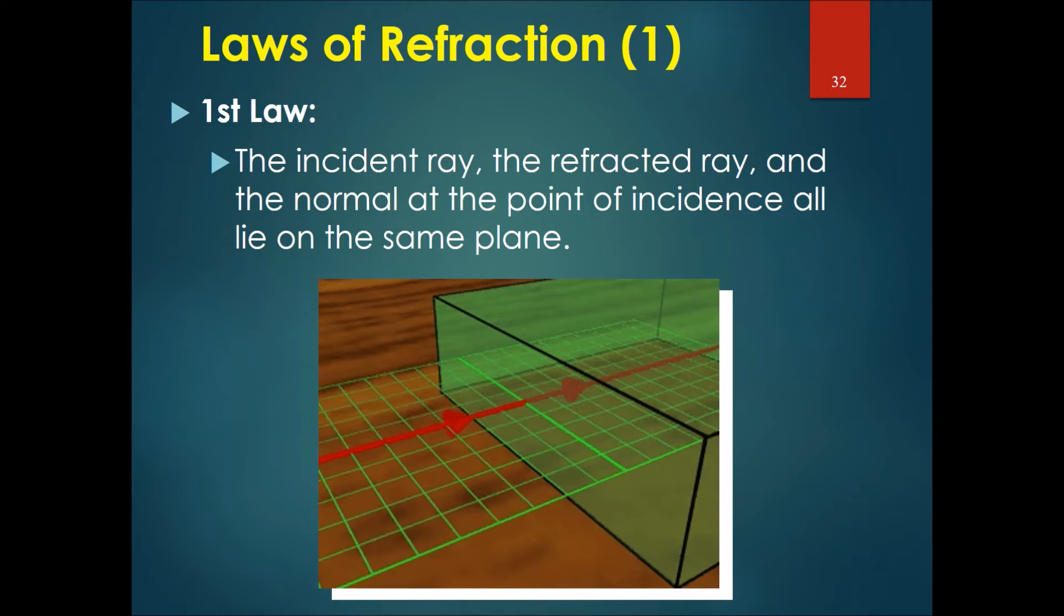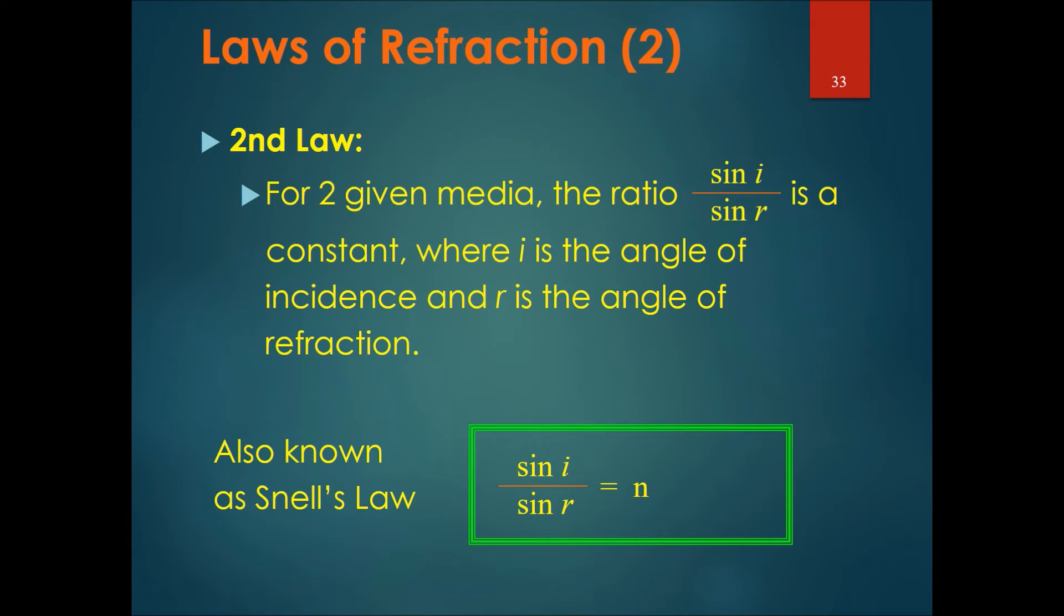The first law of refraction states that the incident ray, the refracted ray, and the normal at the point of incidence all lie on the same plane. This is the same concept as the law of reflection. If I drew all these rays, you would be able to place them all on one sheet of paper or one plank of wood.